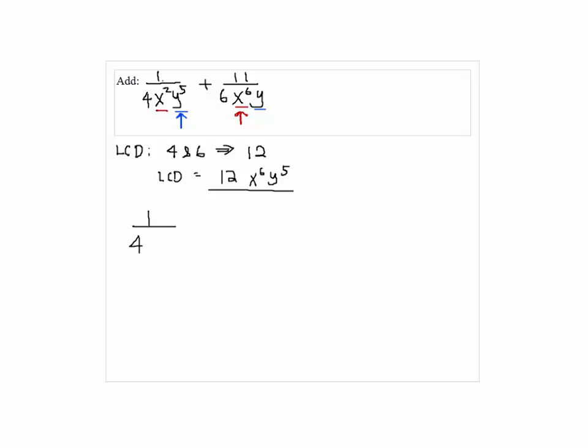Now we are going to rewrite each fraction with the denominator of the LCD which is 12x to the 6 y 5th. So, we multiply 3x to the 4th power to get 12x to the 6 y to the 5th, so we multiply the same factor on top so we get 3x to the 4th power.